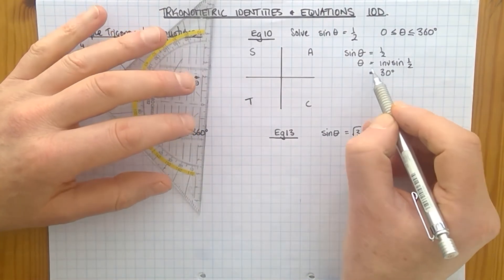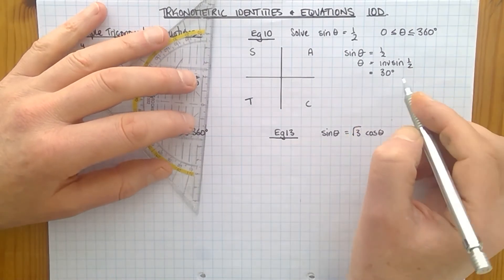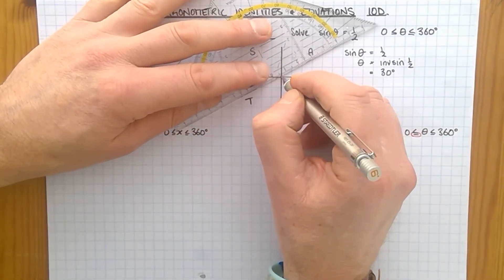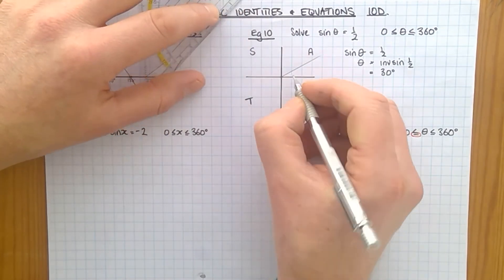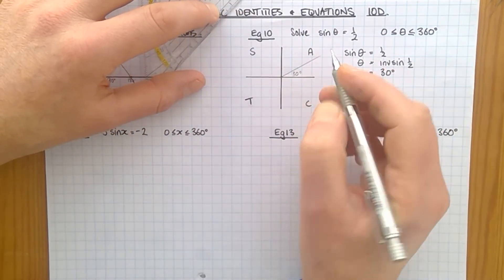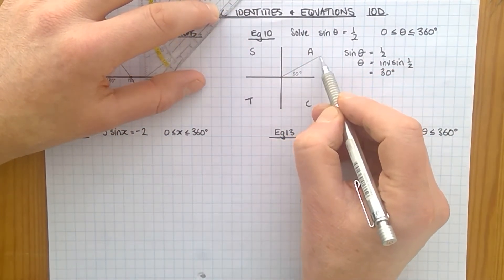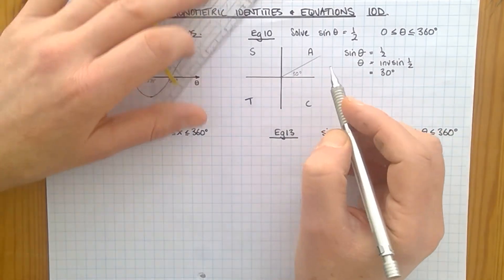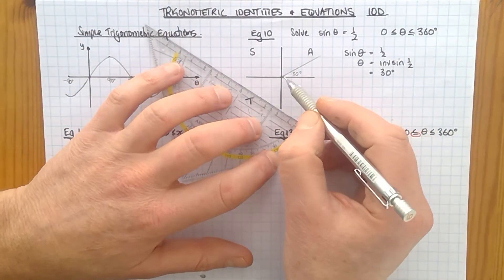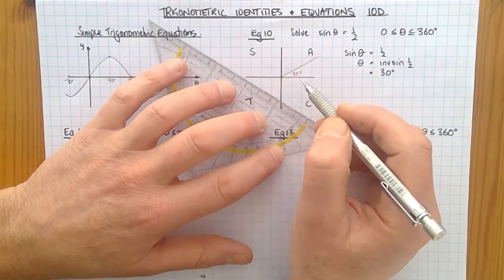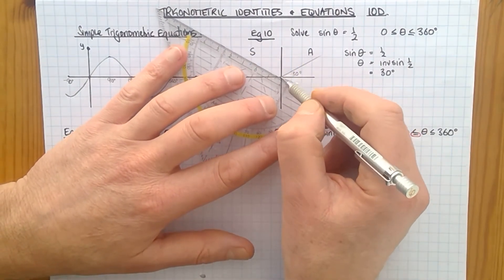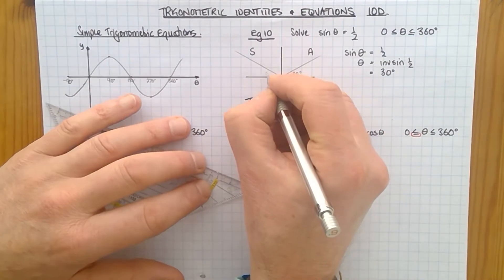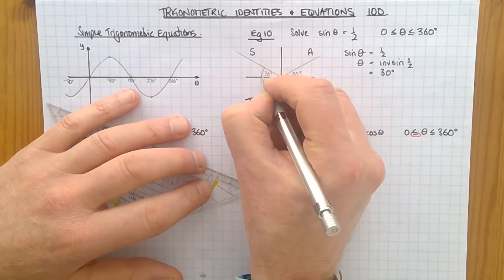So let's see if we can work out how to calculate that. Well, once we've found our primary value for theta, let's mark it on here. It's about there. That's 30. Now sine is positive there. We're dealing with sine. It's a positive ratio. So the other quadrant where there's a positive ratio for sine is over here. So I'm going to do another line like that, where that is 30 degrees.